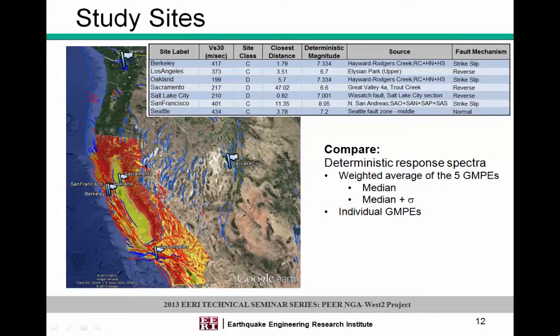In the Bay Area I picked three sites — Berkeley, San Francisco, and Oakland — because they have different distances to different faults and different site conditions. I also picked LA, Salt Lake City, and Seattle. The sites have different shear wave velocities, different site stiffnesses, different distances and magnitudes from the 2008 deterministic models, and different fault mechanisms. In the ground motion prediction equations, these are the parameters that are varied; everything else I kept constant or defaulted, including the Z values.